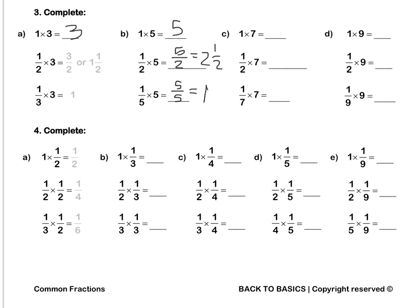Press pause to complete Question 3 by yourself. Question 4. We multiply our numerators and we multiply our denominators: 1 times 1 is 1, and 2 times 2 is 4. A third times 1 half: 1 times 1 is 1, and 3 times 2 is 6. Let's do B together: a half of 1 third is 1 sixth because 1 times 1 is 1, and 2 times 3 is 6. And a third times 1 third is 1 ninth.